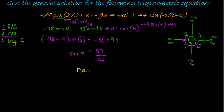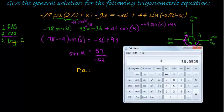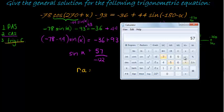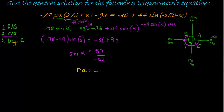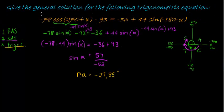And then we can do our reference angle using a calculator. To do that, we take 57 divided by 122, negative 0.467, we want the inverse sine of that, gives us negative 27.85 degrees. That's my reference angle.